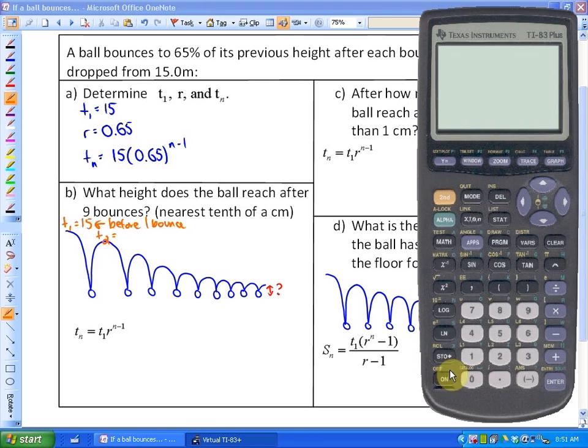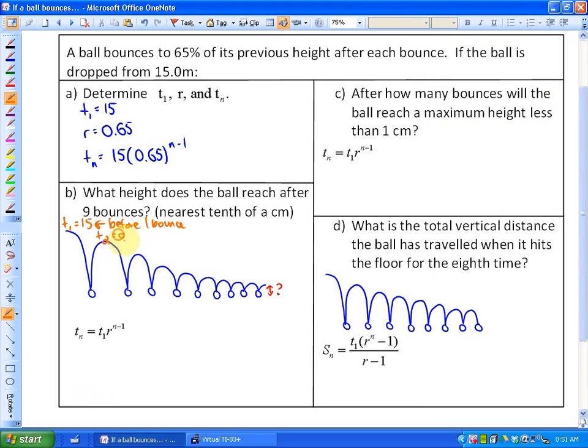Term 2, if you wanted to find it out, it would be 15 times 0.65, so 65% of that height would be 9.75. That is after 1 bounce.